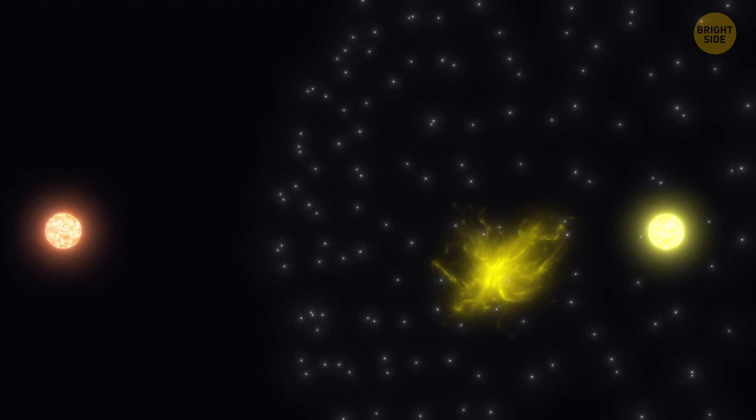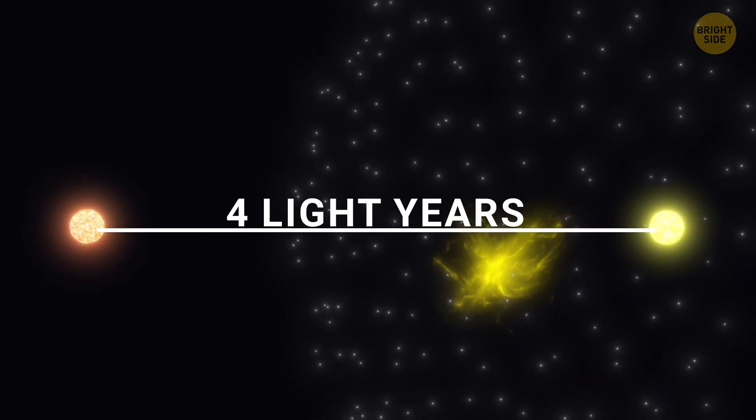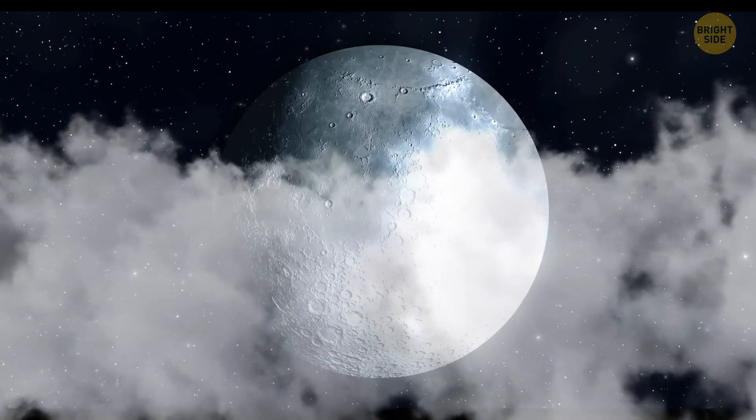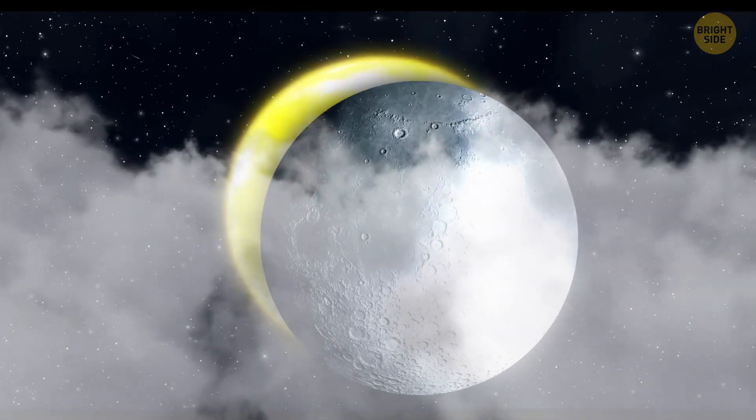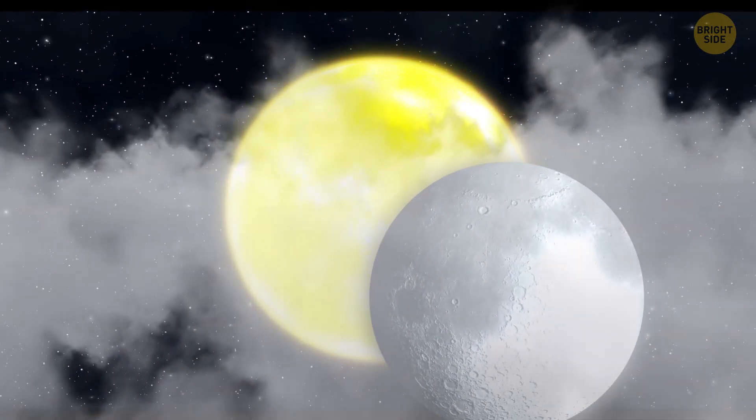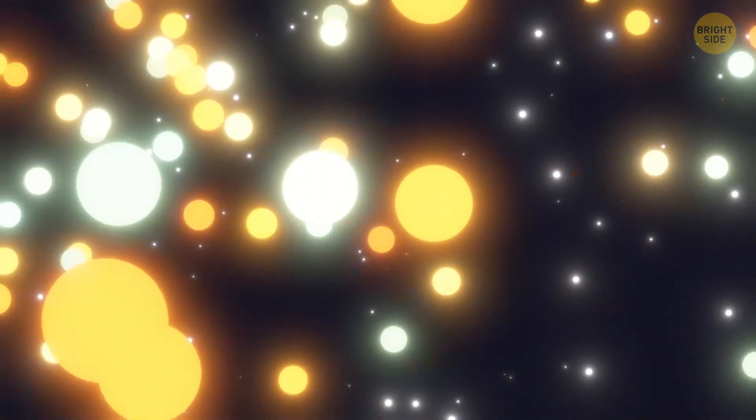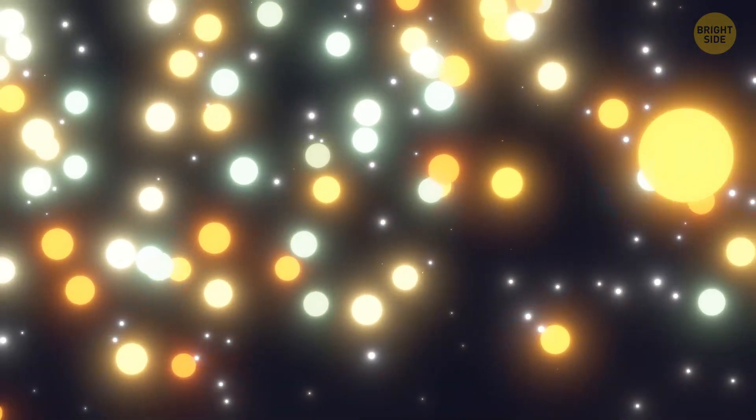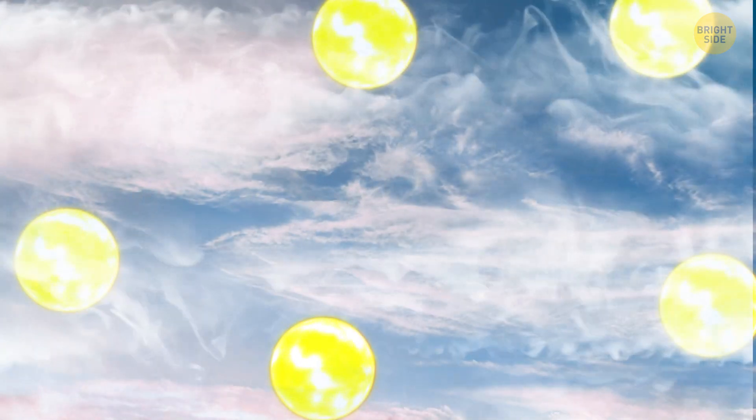Our closest star is Alpha Centauri. It's about four light-years away from the sun. If it was just a couple of light days away, it would shine much brighter than the full moon. So if we somehow managed to survive in crazily dense star regions, the sky would be white all day long.